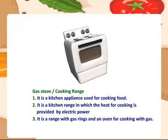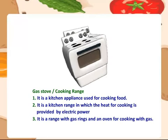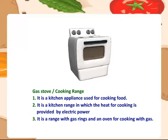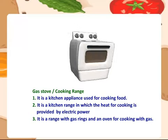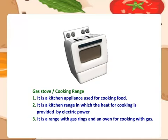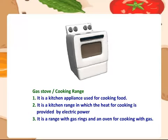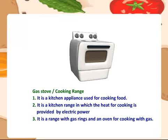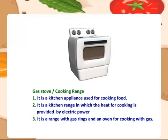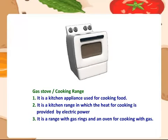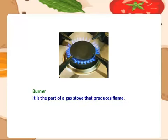Gas stove — it is a kitchen appliance used for cooking food. It is a kitchen range in which the heat for cooking is provided by gas. It is a range with gas rings and an oven for cooking with gas. Burner — it is the part of a gas stove that produces flame.